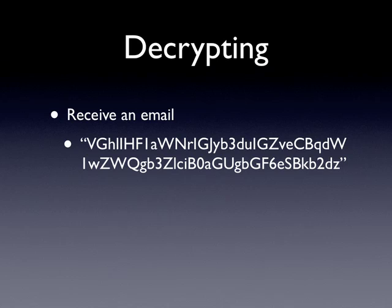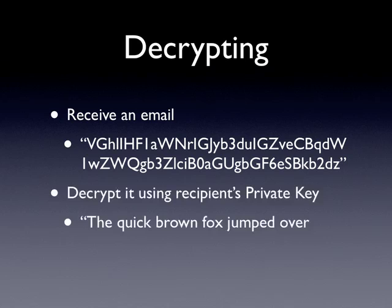The person who gets the email has a private key which can be used to decrypt the email. Once you run it through, you get the clear text again. This is end-to-end encryption — once you type on your computer and hit send, it will encrypt, go through the internet, and then when the person receives it, it gets decoded. So from both ends, end-to-end, it's secure. There's nothing along the way that can interrupt this.